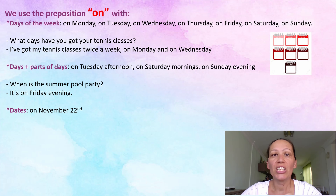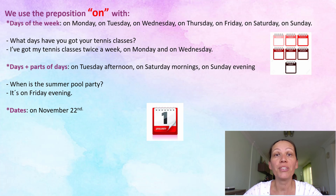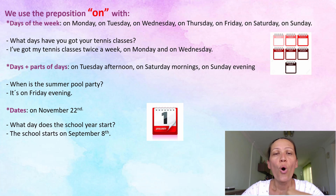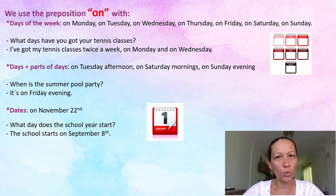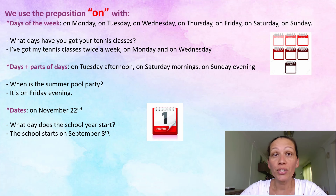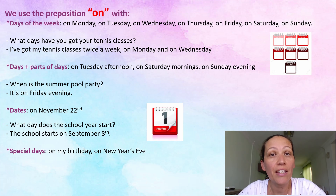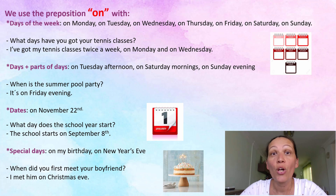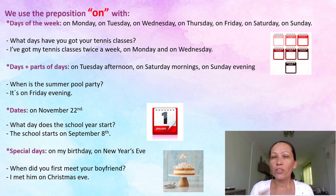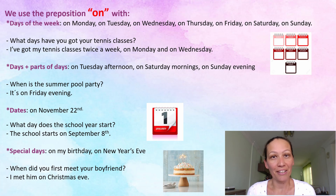We use the preposition 'on' when talking about dates. For example: on November 22nd. What day does the school year start? The school starts on September 8th. We also use 'on' for special days — on my birthday, on New Year's Eve, on Christmas Eve. For example: when did you first meet your boyfriend? I met him on Christmas Eve.